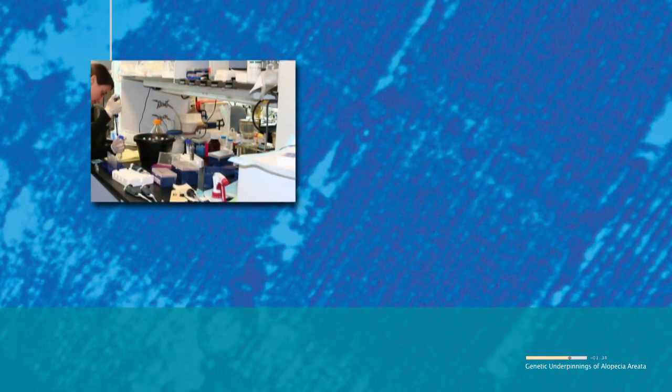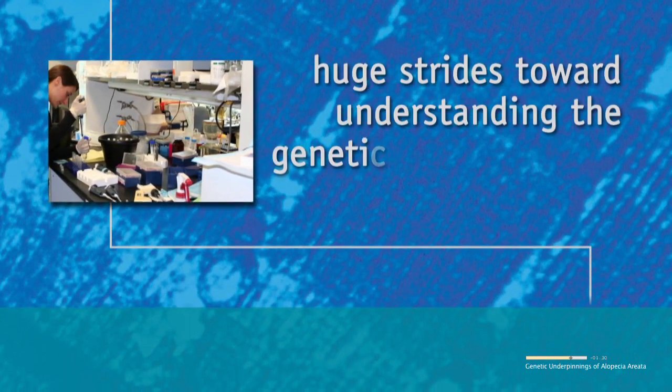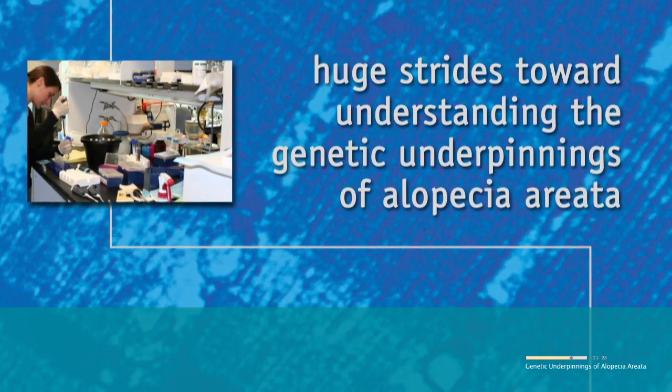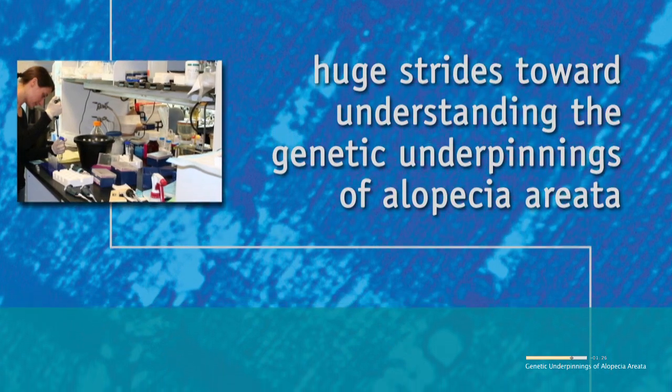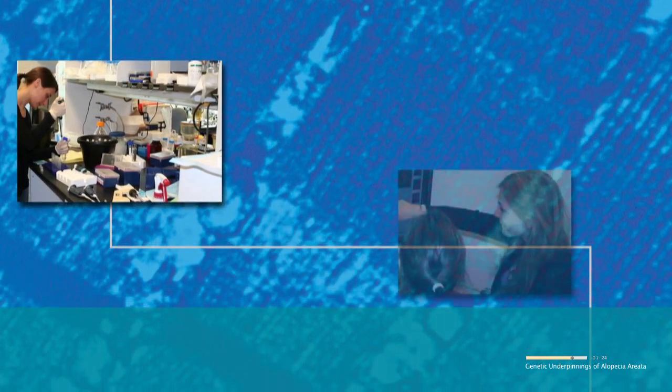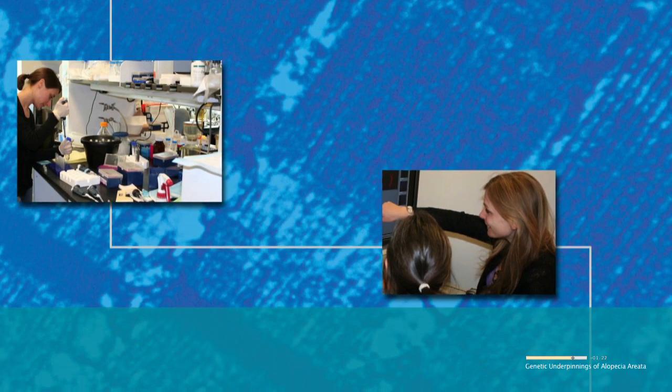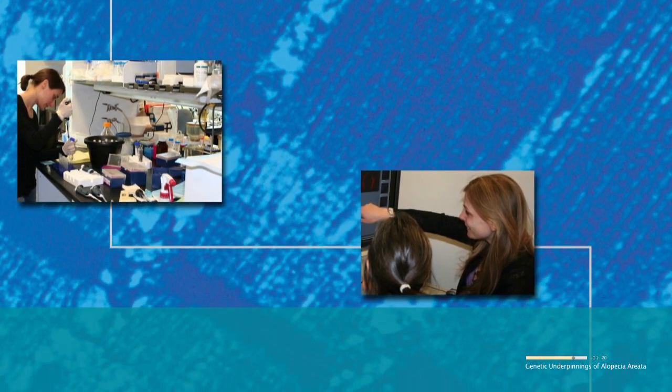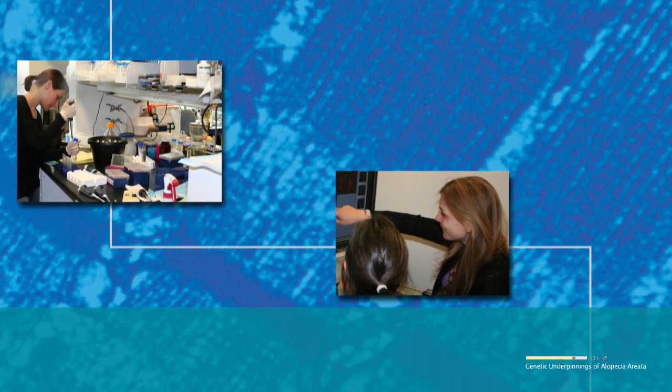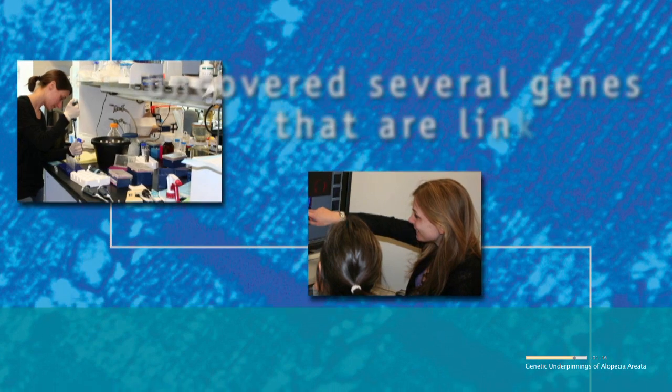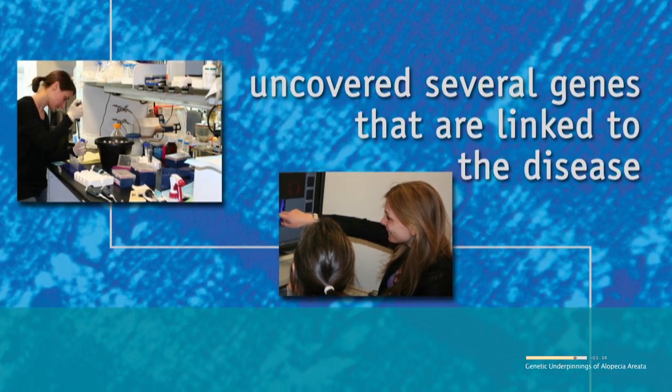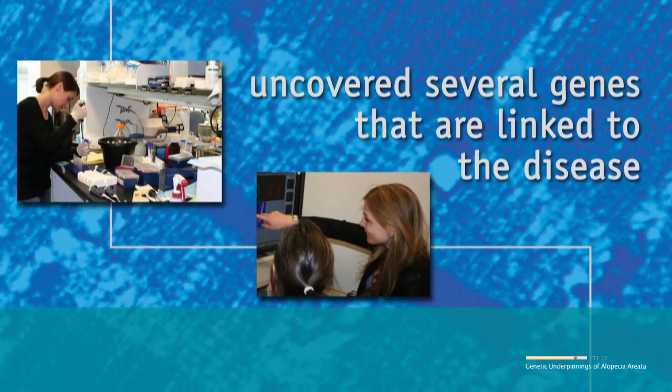In recent years, investigators funded by NIAMS have made huge strides toward understanding the genetic underpinnings of alopecia areata. For example, Angela M. Cristiano, PhD, and her research team at Columbia University used genetic material from the National Alopecia Areata Registry and uncovered several genes that are linked to the disease.